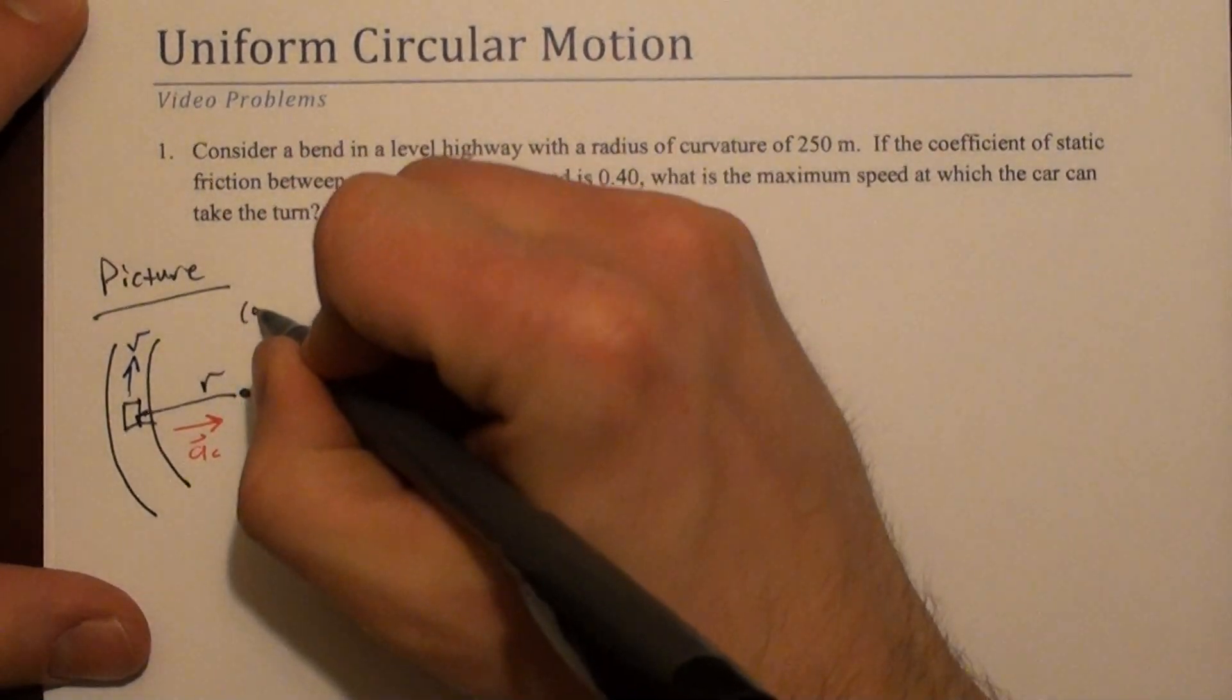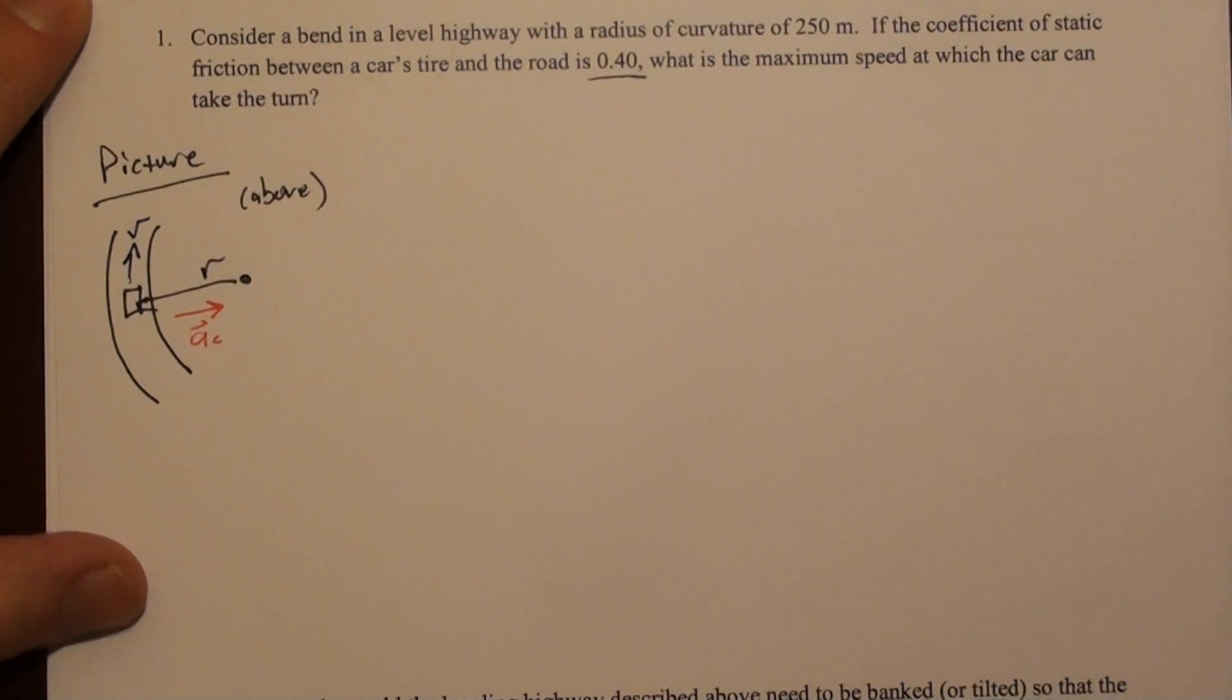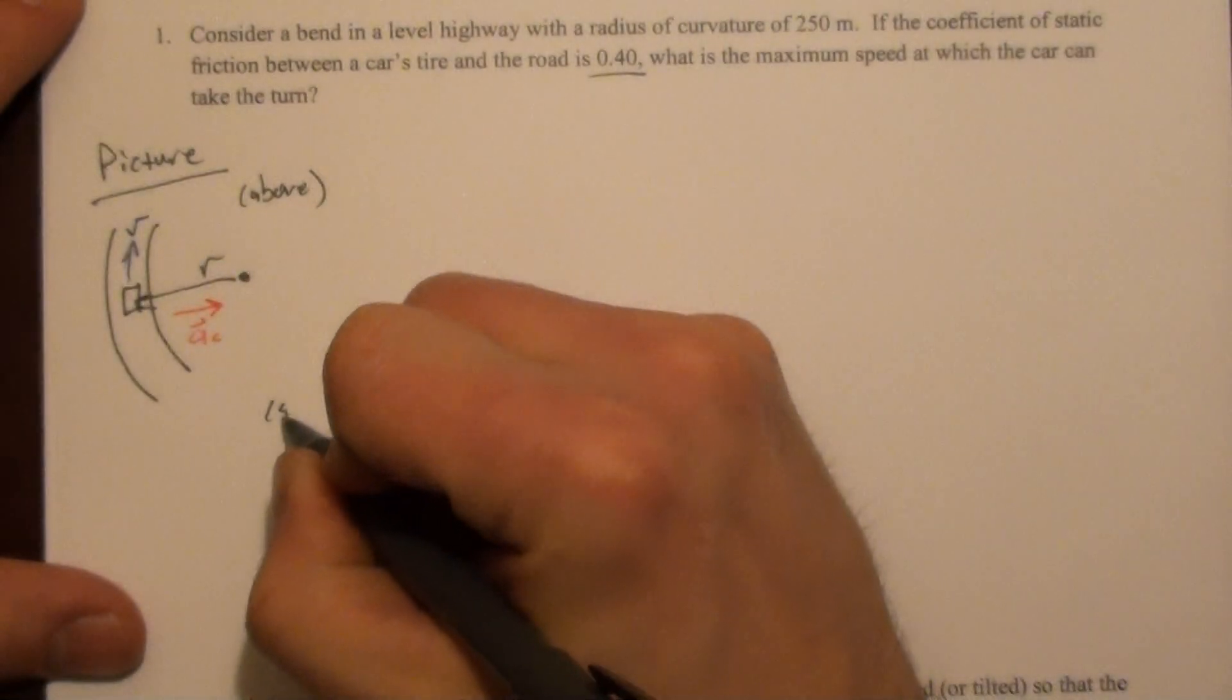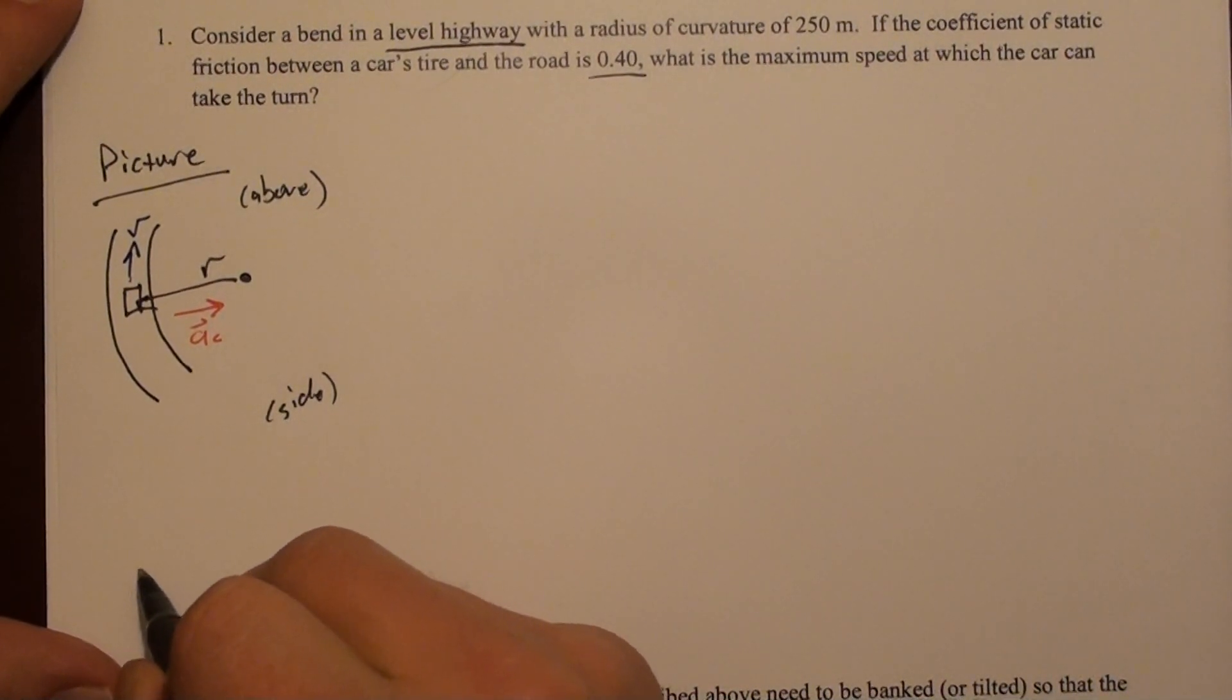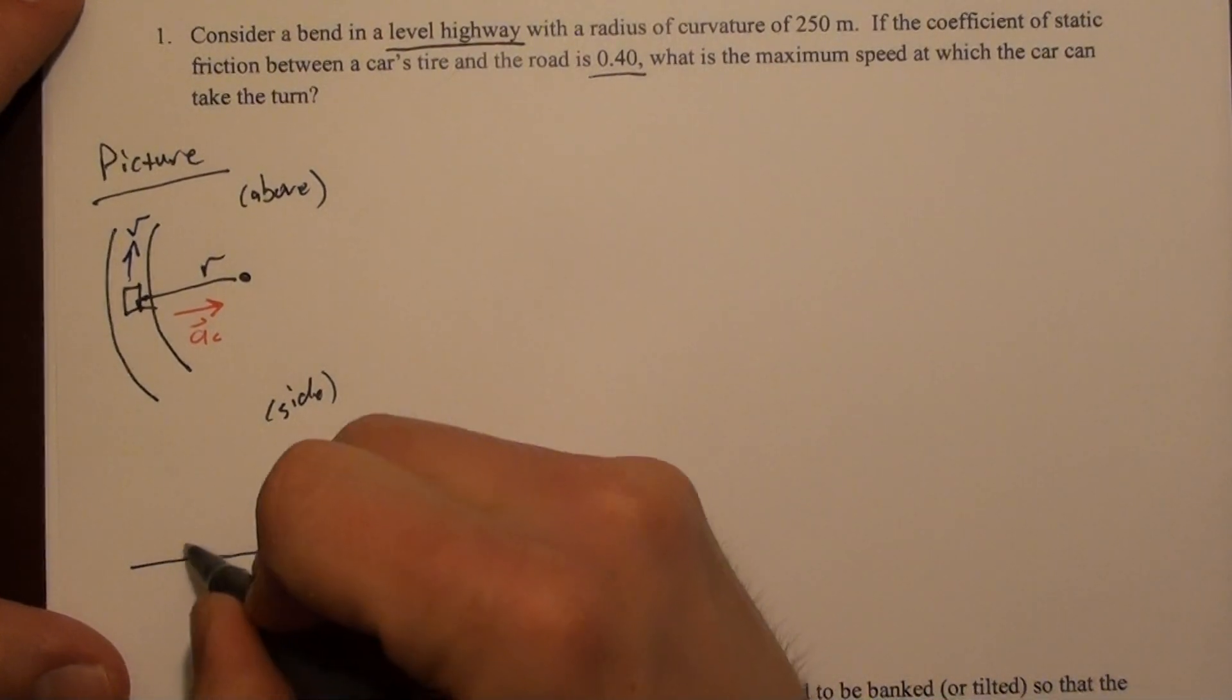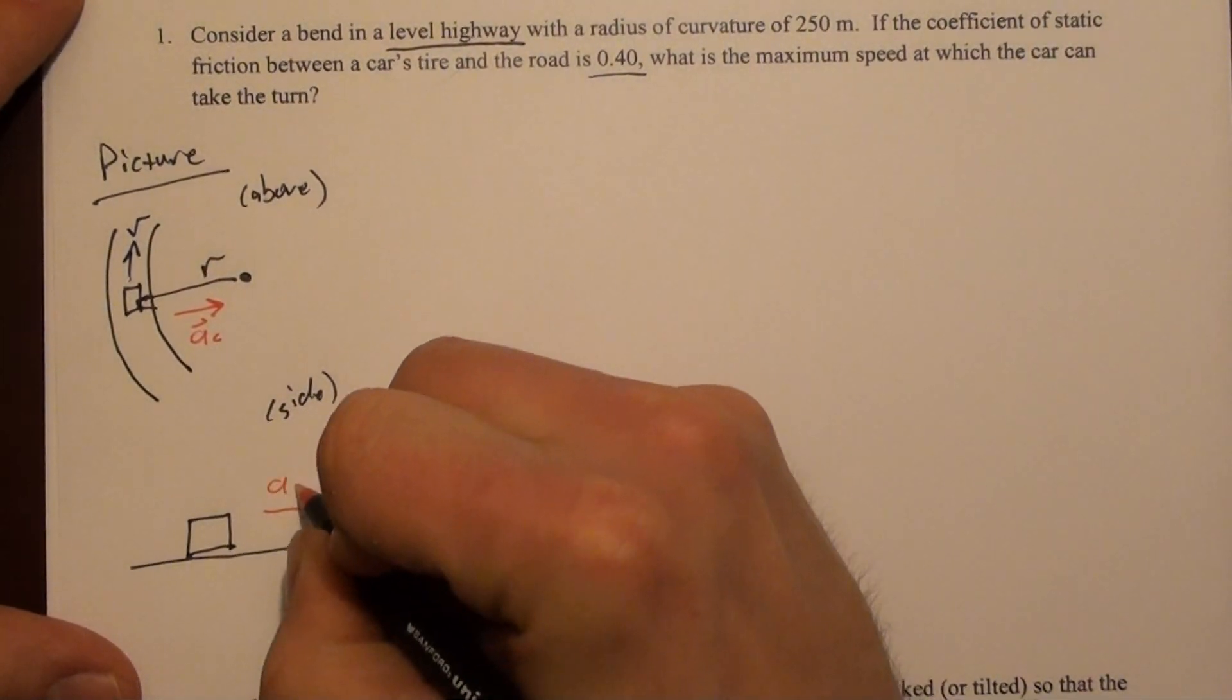This is a picture from above, but it'll be useful to consider a picture from the side as well. We're told it's a level highway, meaning it's parallel with the horizon. Here's our vehicle looked at from the end. The centripetal acceleration points to the right, the way we've drawn it.